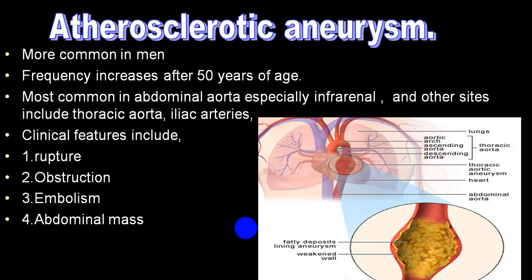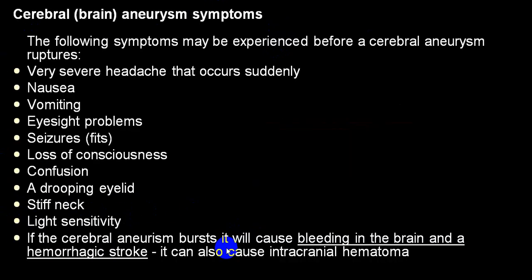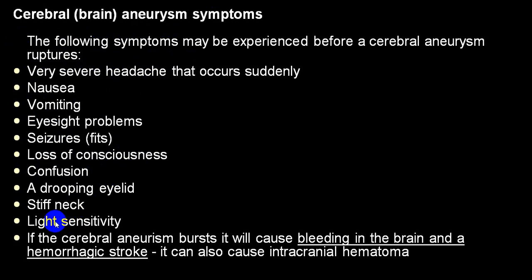This is typical of atherosclerotic aneurysm, which can rupture, get occluded, or cause thromboembolism, presenting as a pulsatile abdominal mass. In cerebral aneurysm — most commonly berry aneurysms, which are congenital — rupture produces intracranial hemorrhage or subarachnoid hemorrhage with severe headache, nausea, vomiting, seizures, and altered level of consciousness ranging from confusion to coma. Meningeal signs and signs of raised intracranial pressure are also present.